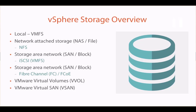When we install any ESXi server, the local hard drives become the local storage of the vSphere server and the file system is VMFS. The other storage type is called NFS, which means Network File System or Network File Server. This storage can be created on any network-attached device like NAS, or we can also create this type of share on Windows Server 2019 or earlier versions of Windows. Another shared storage option is SAN, which is block storage.